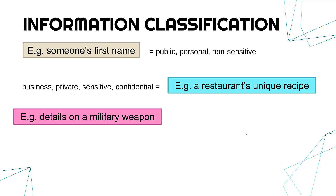Details on a military weapon are different — you could potentially go to prison if you released this information. It is business information, and it's private. It's sensitive because releasing important weapon details to other governments could cause a serious issue. In many cases this would be classified information, with the government placing a label on it telling people to be very careful, as they could be legally punished if they leak it. Classified generally only applies to governments.